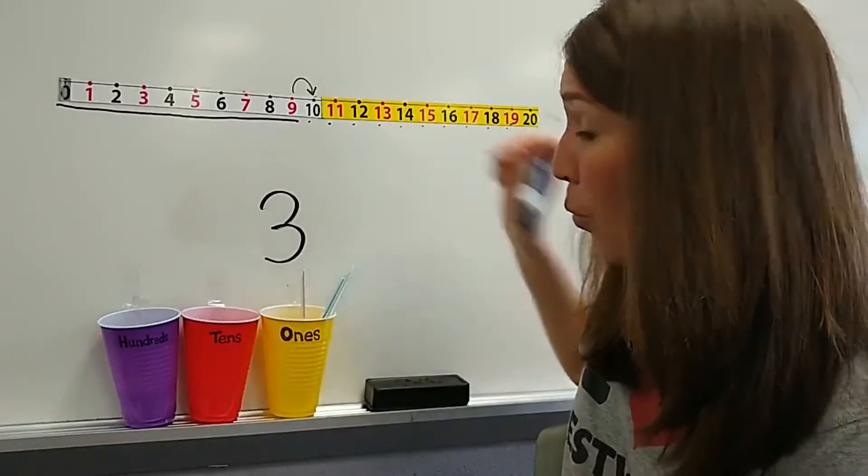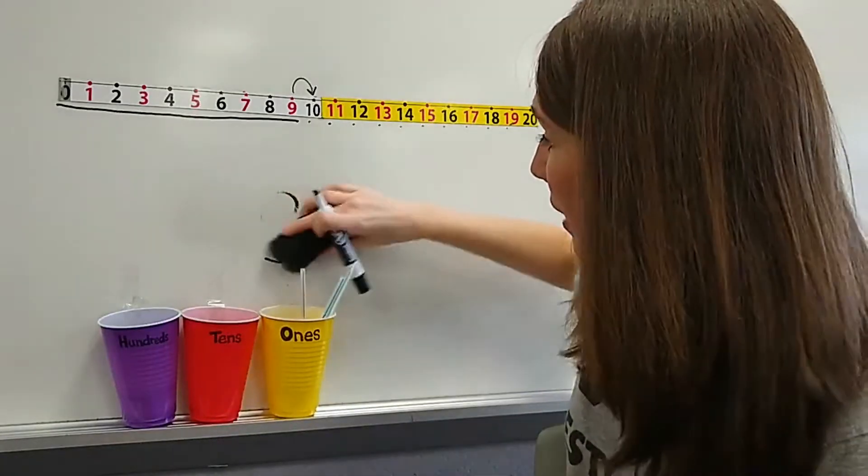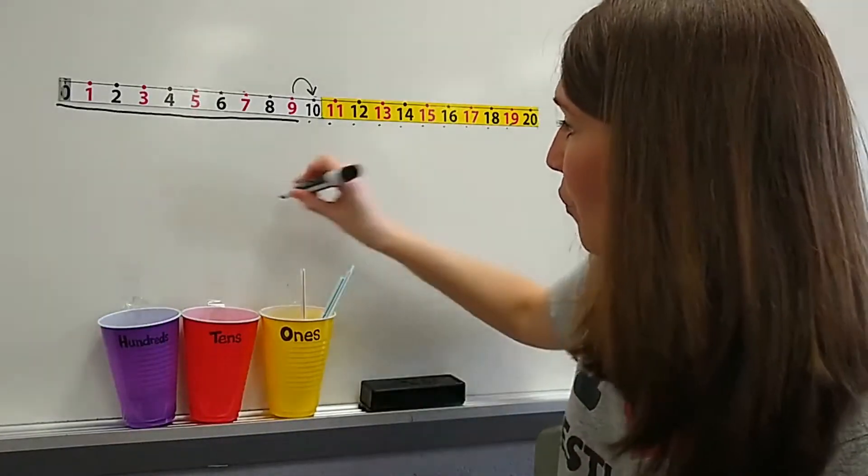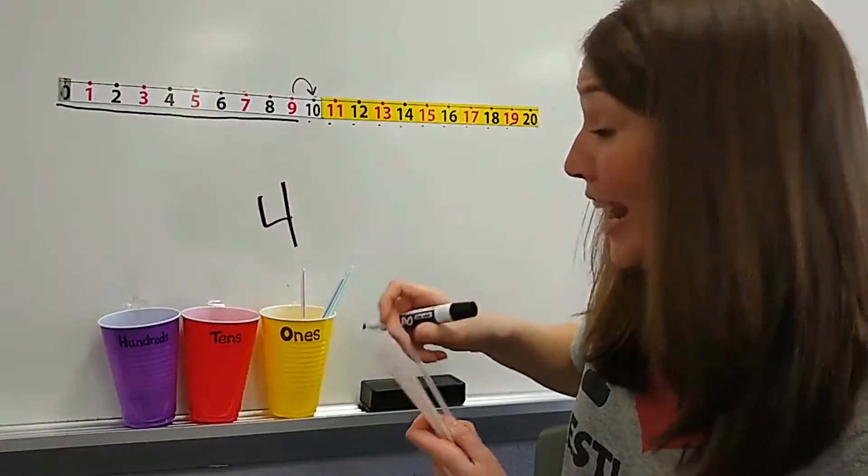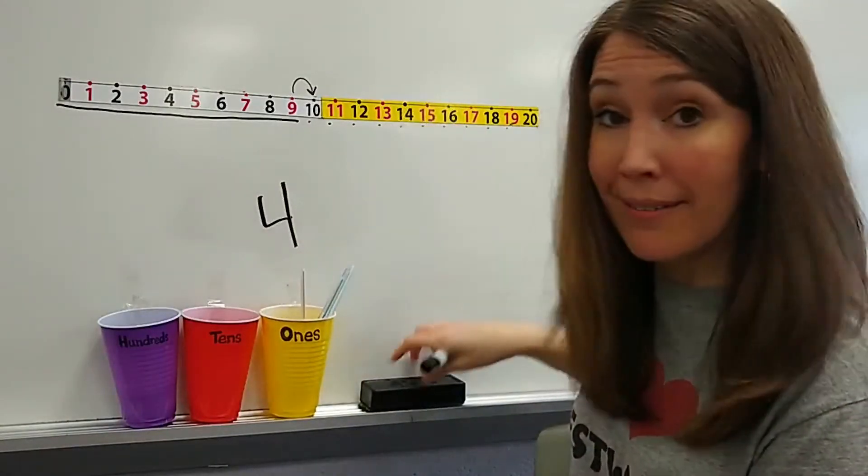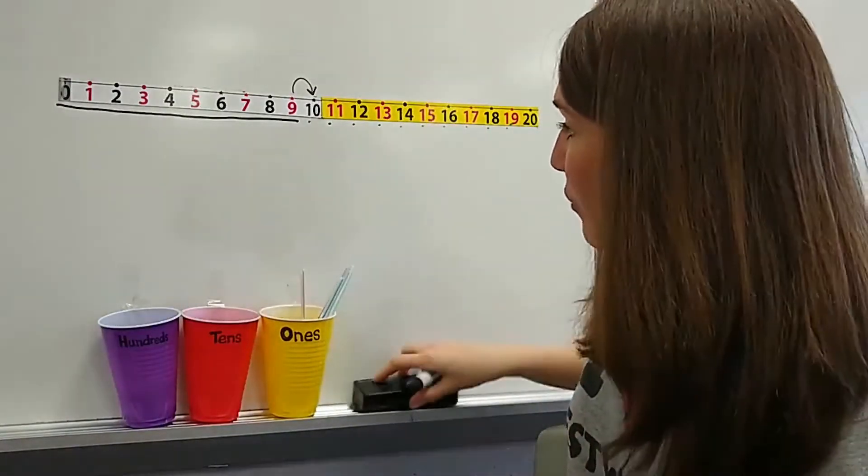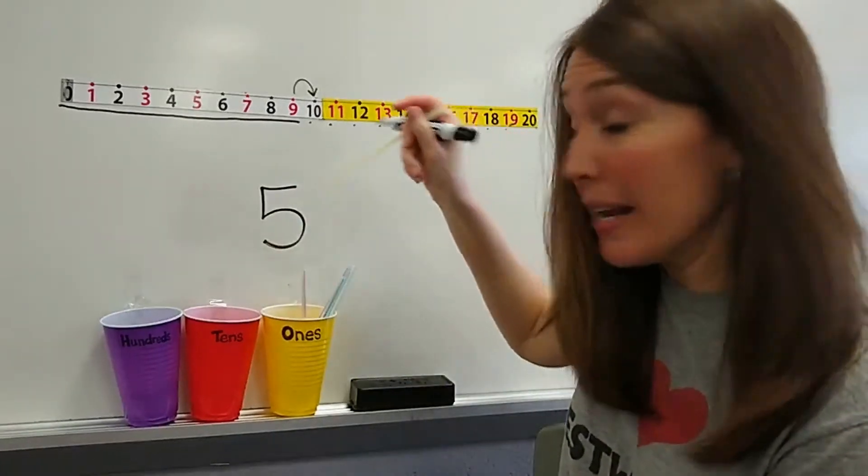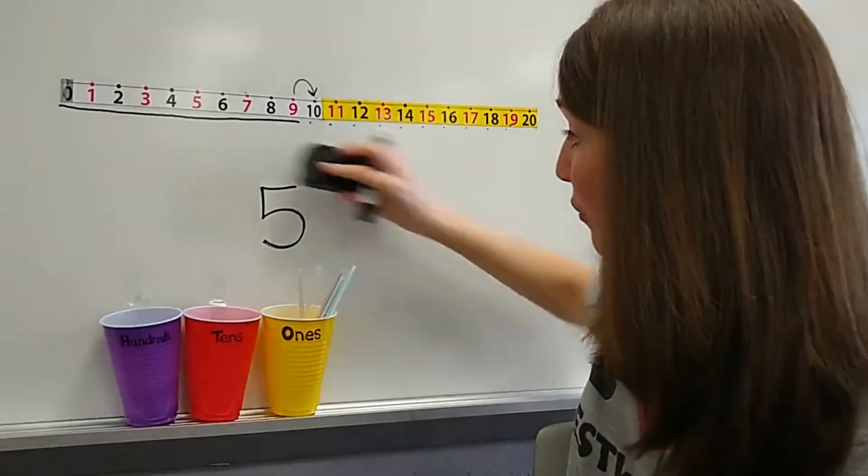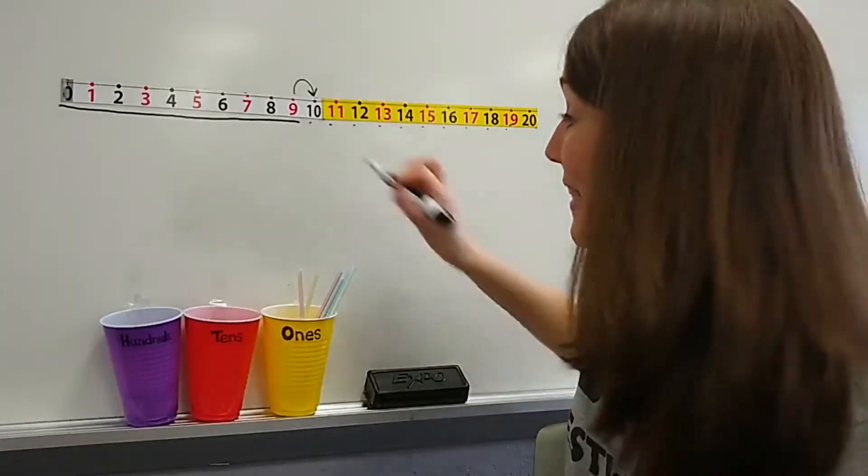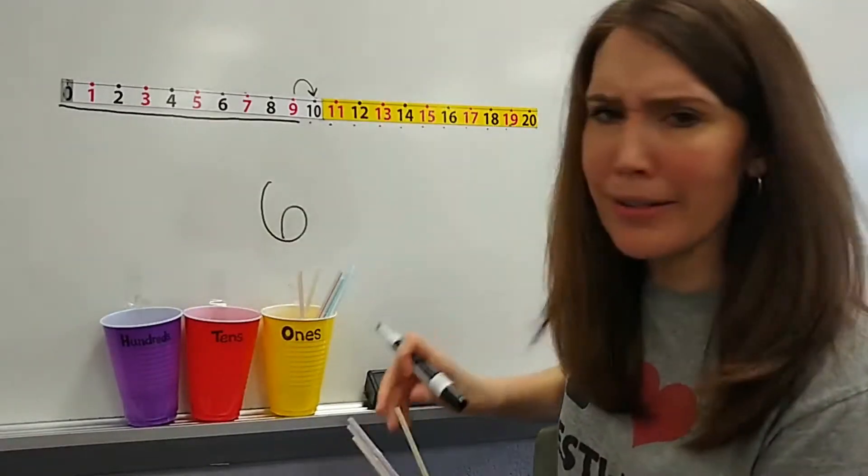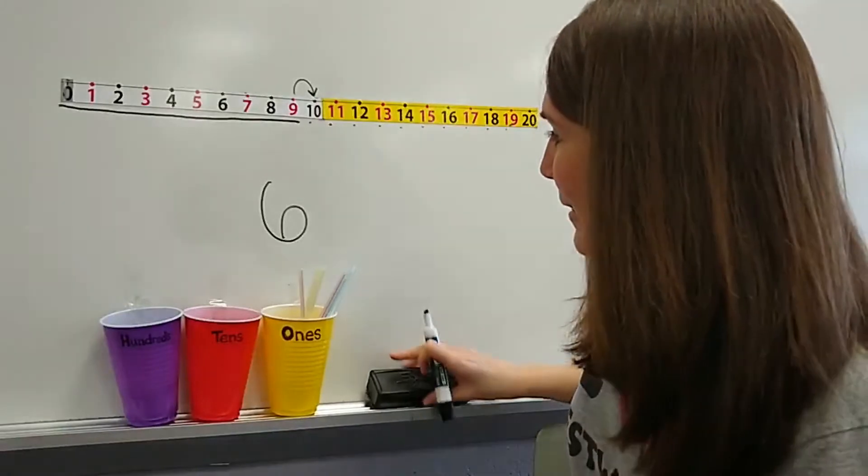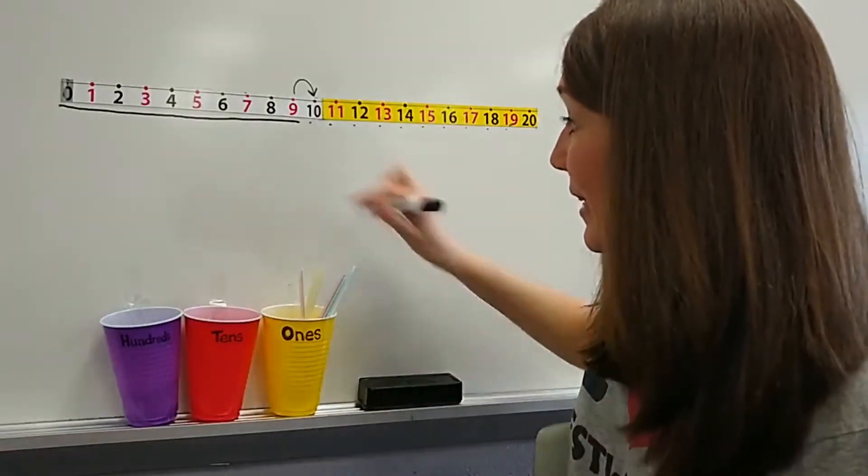Nice job. I add one more to the ones cup, and now we have four. If I add another, what comes after four? Five. Good job. If I add another straw, now we have six. So far, so good, so easy. Six and one more make seven.